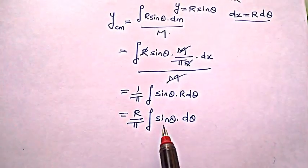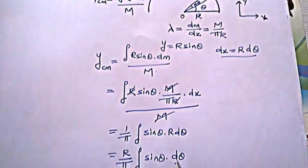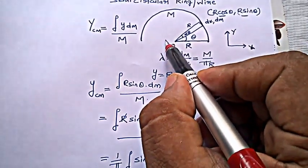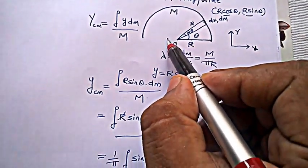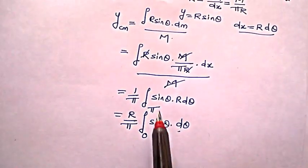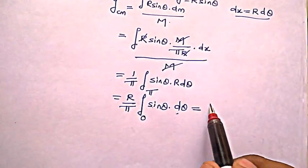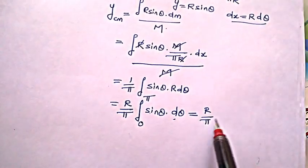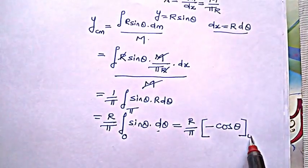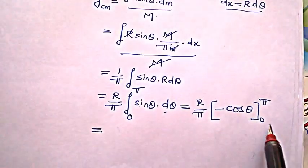Now it's time to get the limits. The limits can be from this variable dθ. The limits are from 0 to this point, which is making an angle 0 to 180 degrees. So the limits are 0 to π sin θ dθ. So this is r by π; integration of sin is minus cosine, so minus cos θ from 0 to π.